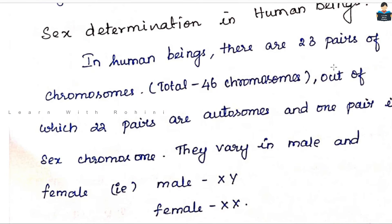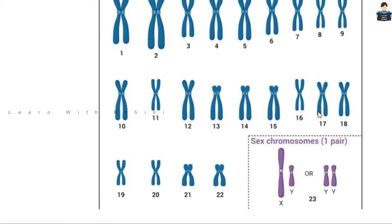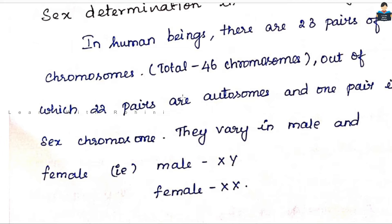Humans have autosomes and one pair of sex chromosomes. Sex chromosomes X and Y — XY is male, two X chromosomes is female. We have 23 pairs of chromosomes, total 46 chromosomes. Out of the 23 pairs, 22 pairs are autosomes — normal chromosomes — and one pair is sex chromosomes. Male is XY; female is XX.